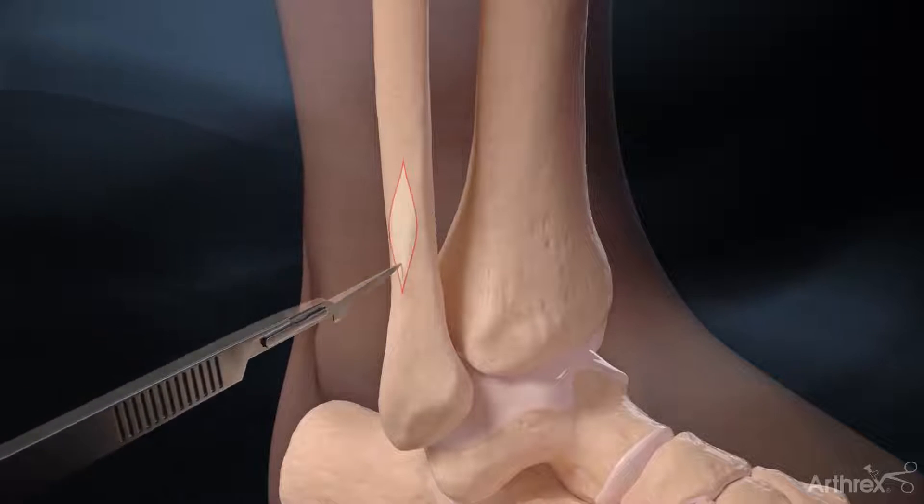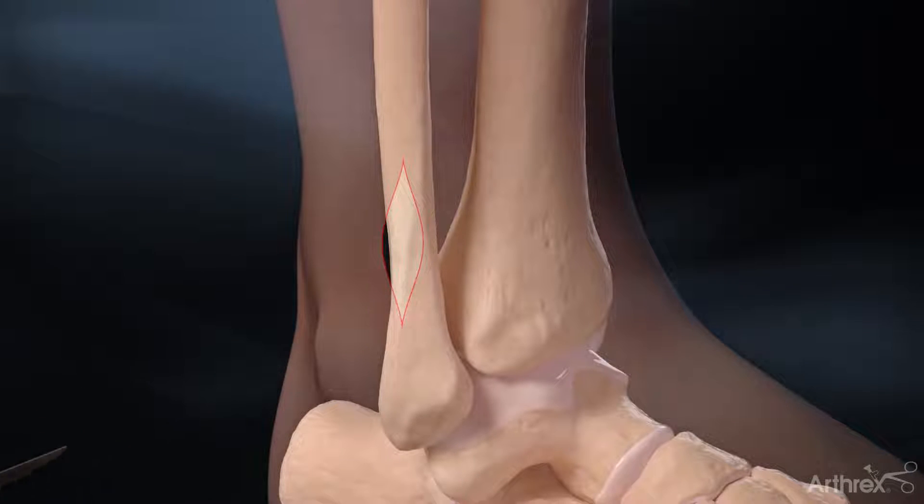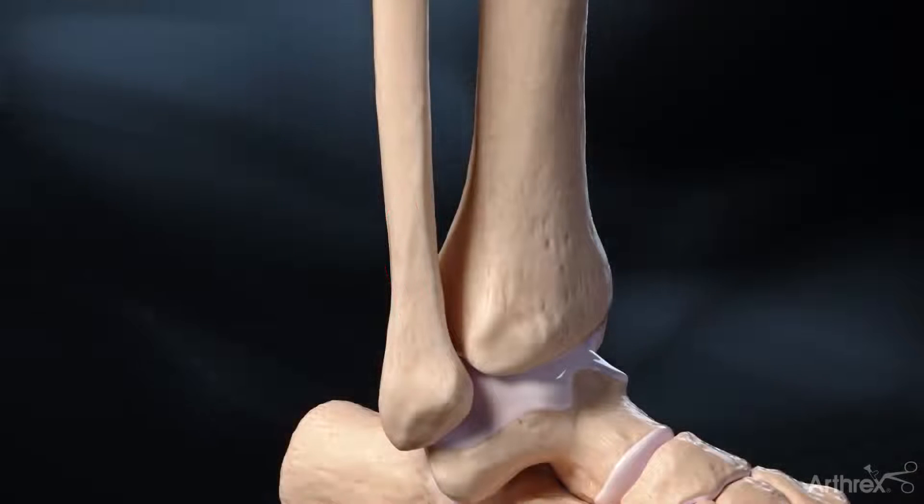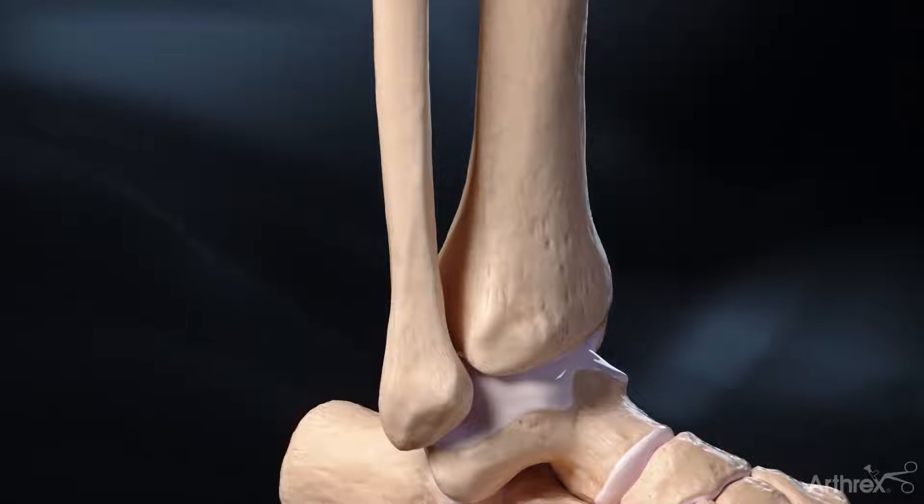A small incision is made along the lateral fibula. The fibula is first reduced as best as possible using a combination of fluoroscopic and visual cues.